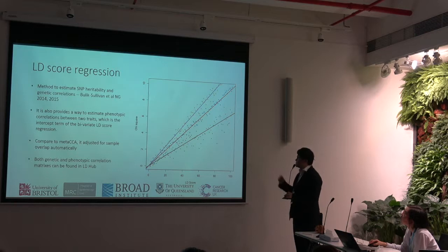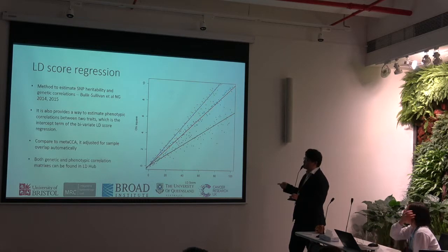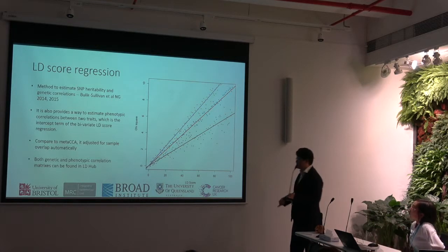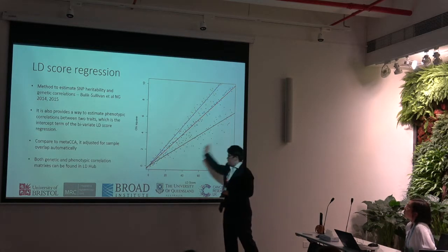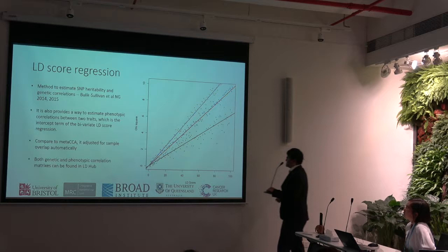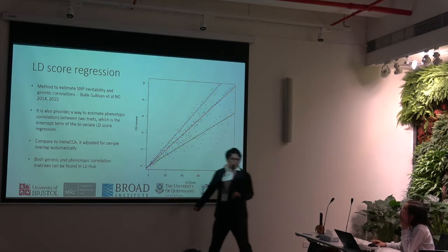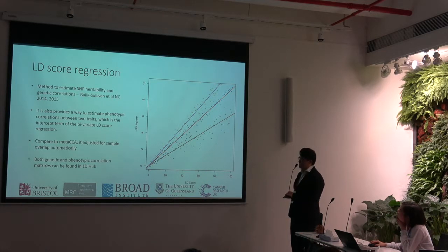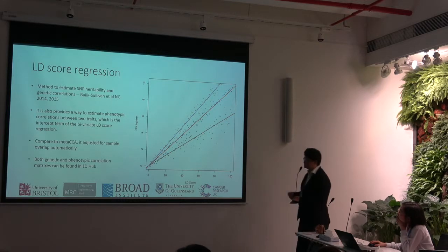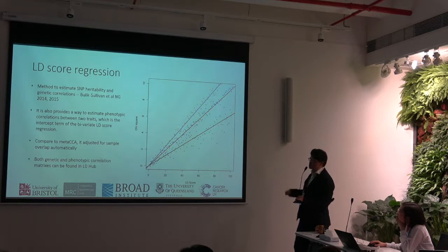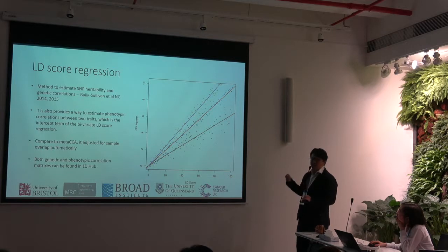As we introduced, LD score regression is a quite well-known method that also provides a way to estimate the phenotypic correlation. The slope gives the genetic correlation between two traits, and the intercept is actually the phenotypic correlation, automatically adjusting for sample overlap. Another advantage is that the genetic and phenotypic correlation estimates are pre-calculated, and you can look them up in LDHub.